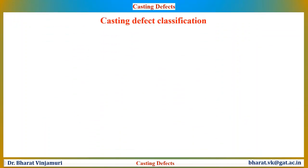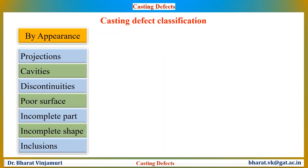Let us understand how we analyze defects and how to classify casting defects. The basic identification of defects is by appearance — that is, by just looking at the castings we can identify the defects. Whether it is a projection or a cavity, or if it has any discontinuities, or if the component has poor surface finish, just by appearance it can give us the first look of information.